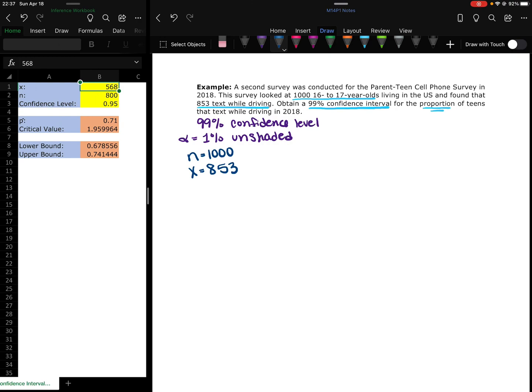We're going to go through this by hand and then we'll go ahead and check our work in Excel again. So first thing, let's go ahead and find our p-hat.